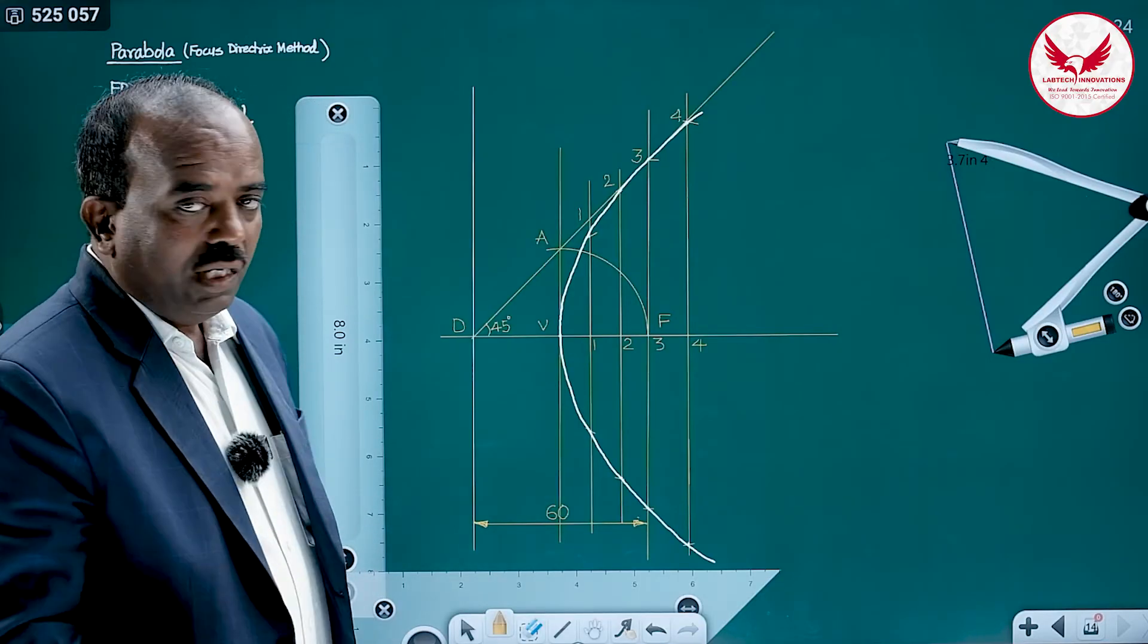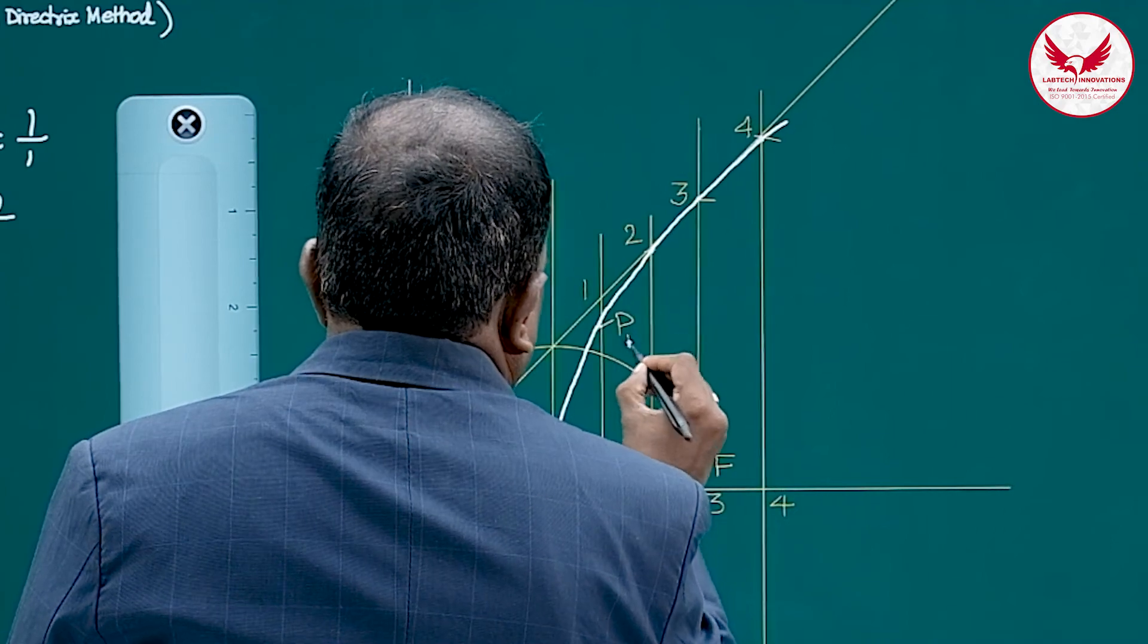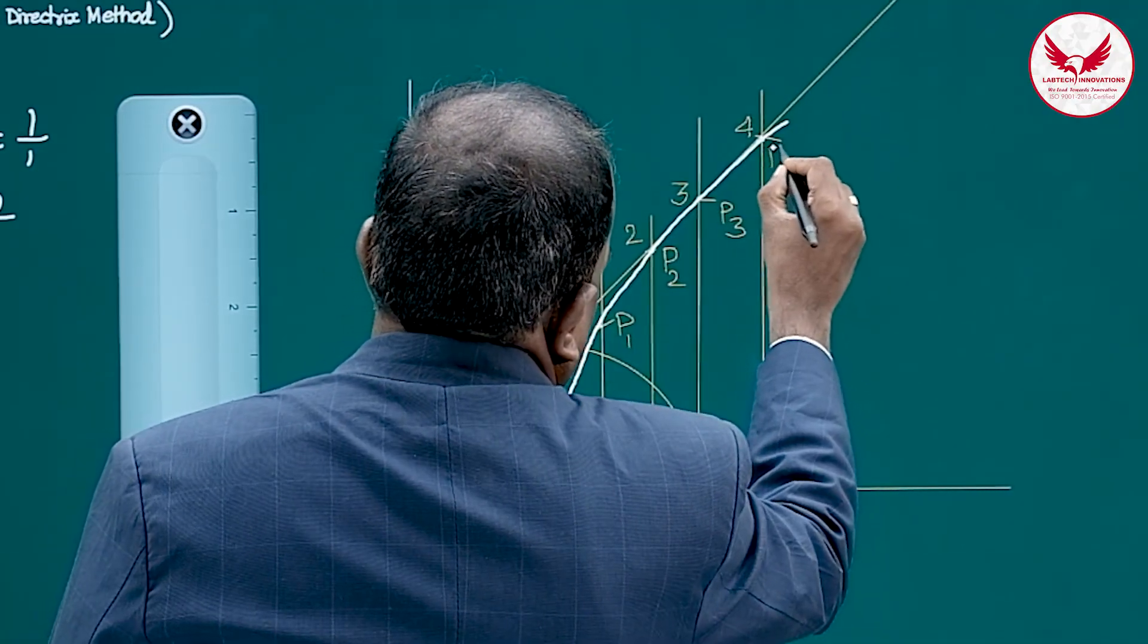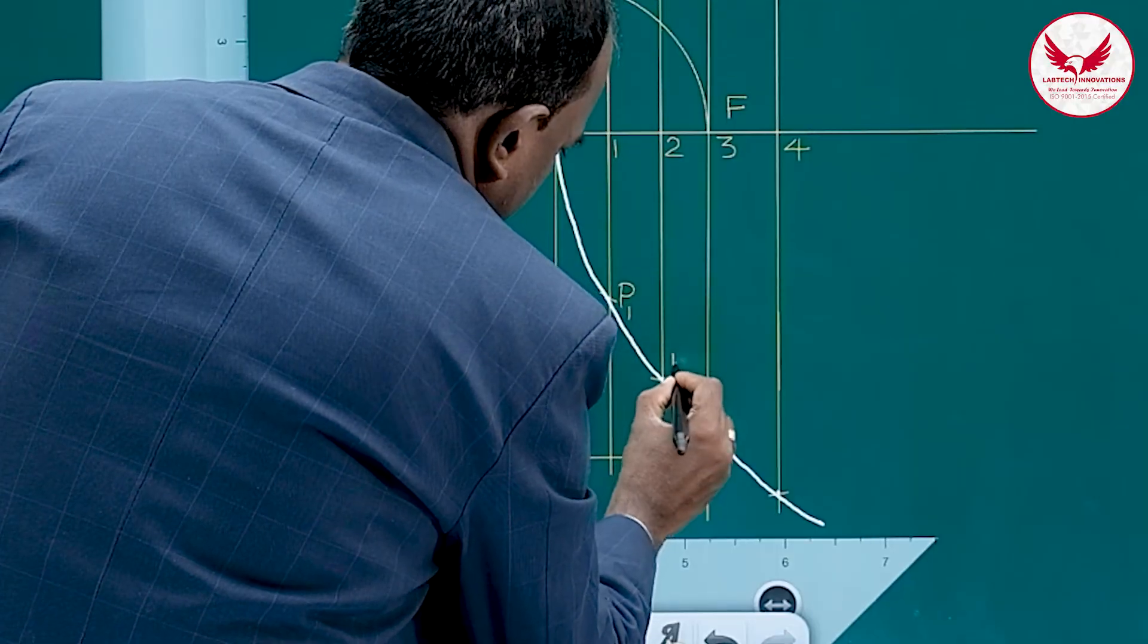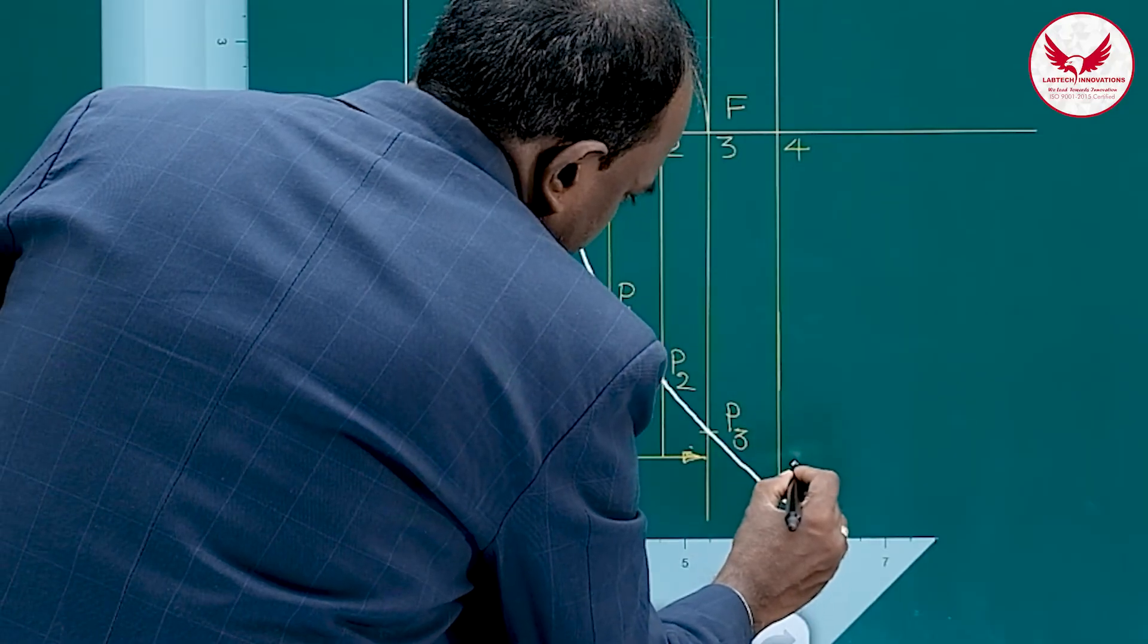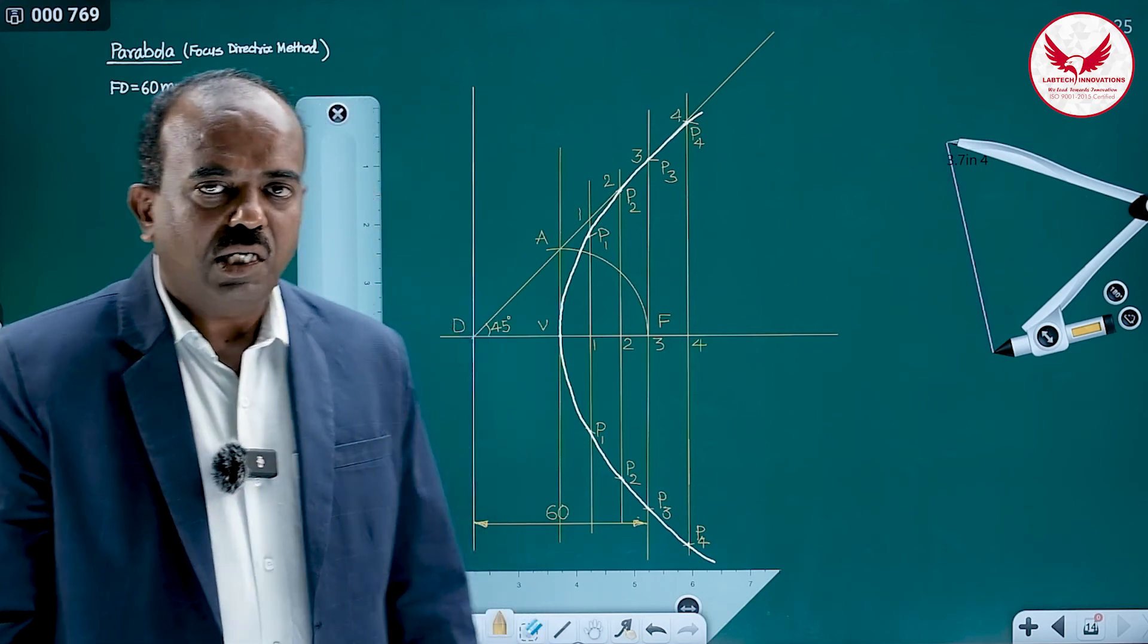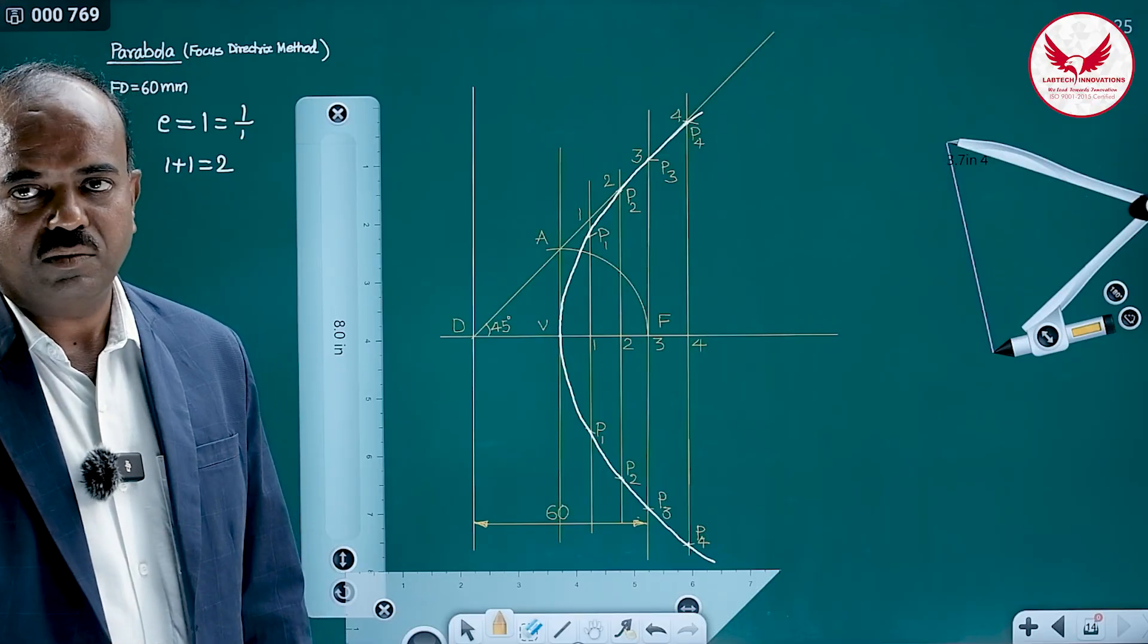Afterwards naming is optional. You can name these points just like p1, p2, p3, p4. Same names you can repeat, location is different, p1, p2, p3, p4. It is the parabola by focus directrix method having 60 mm distance between focus and directrix. Thank you.